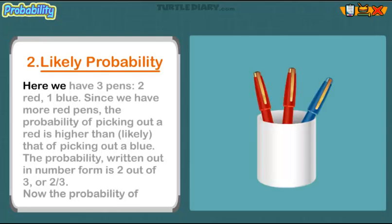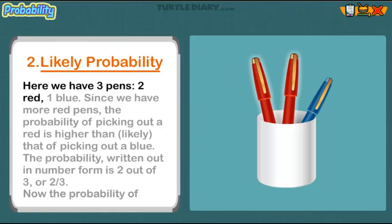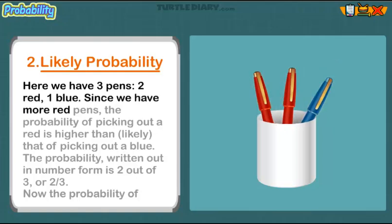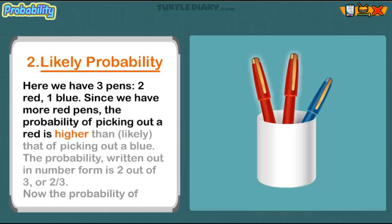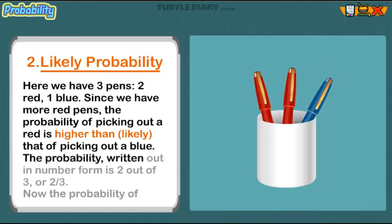Here we have three pens: two red and one blue. Since we have more red pens, the probability of picking out a red is higher than that of picking out a blue. The probability, written out in number form, is two out of three, or two-thirds.